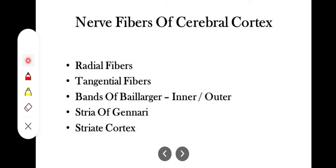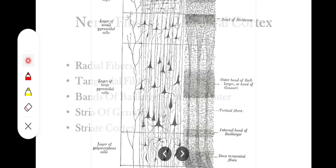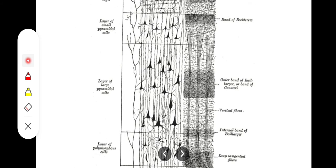Because of this stria of Gennari, the occipital lobe or visual cortex is sometimes called the striate cortex. So if asked what the striate cortex is, the answer is that it is the visual cortex in the occipital lobe. The stria of Gennari is a very thick, naked-eye-visible band present in the visual cortex. In layer 4 and layer 5, we have the outer and inner bands of Baillarger.